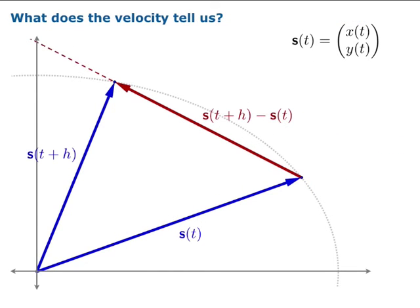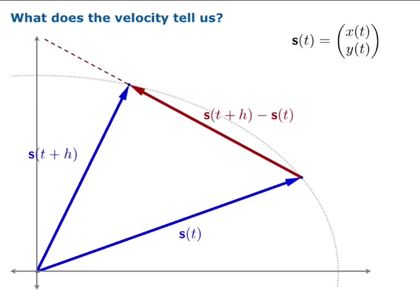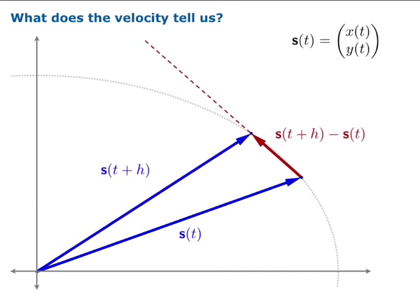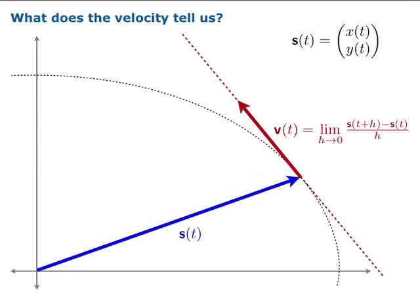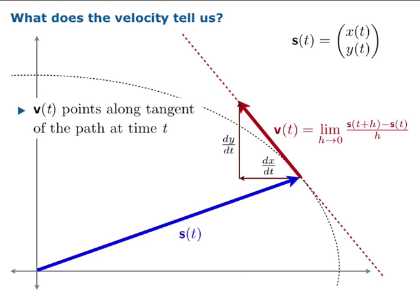What does the velocity tell us? We're going to look at this picture again, where we take the difference s(t+h) - s(t). We're really going to let h go to zero, and this vector shrinks. But you'll notice that the direction in which it points seems to settle down. In fact, as you take the limit of 1/h times that quantity, you get a well-defined vector v(t). We make the claim that v(t) points in the direction of the tangent at that point. One way to see this is you can look at the components of the vector v(t), namely dx/dt and dy/dt. If you took those lengths, you'd get the slope dy/dx at the point.